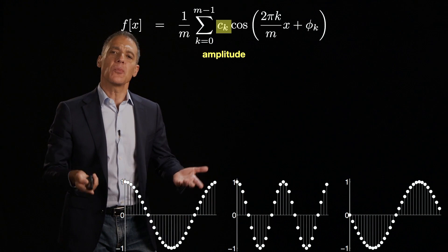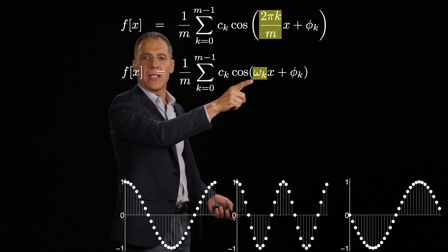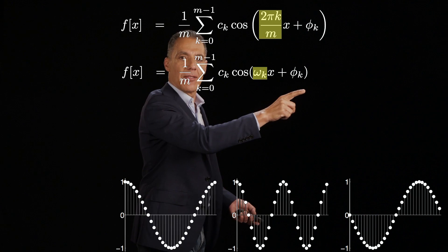So why this basis? We'll see in a little bit why this is a powerful basis. Let me change notation a little bit because I find it clunky to lug around this 2 pi k over m. I'm just going to call that omega sub k. Notice again that the k is the indexing parameter here.